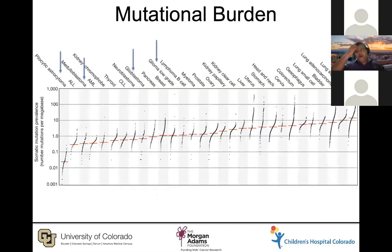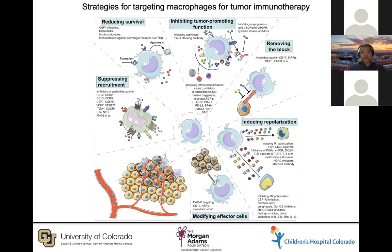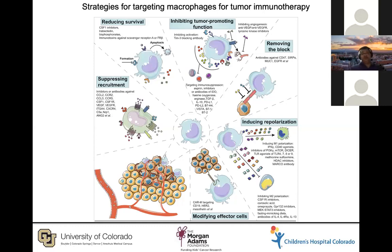One of the biggest problems for brain tumors, especially pediatric brain tumors, when it comes to immunotherapy has been their very low mutational burden — as you can see in this graph, most pediatric tumors sit towards the left side. What I'm going to talk about is macrophage immunotherapy and a central phagocytosis checkpoint called CD47, which allows macrophages to start eating tumor cells. This elegant diagram covers macrophage functions and various strategies for targeting macrophages in tumor immunotherapy.